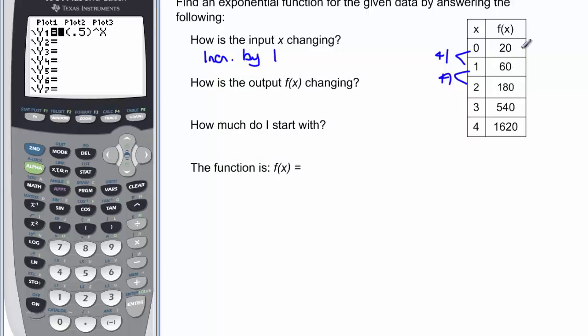How are the y values changing? Well look, looks like from 20 to 60 I might have multiplied by 3, and 60 times 3 would be 180. So we're multiplying by 3.